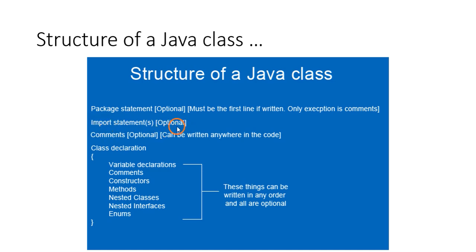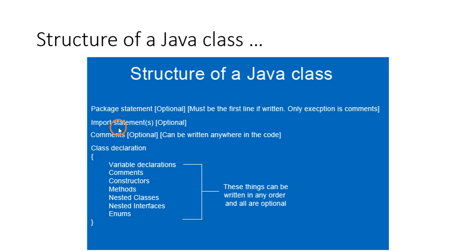Otherwise, the next thing will be one or more import statements, and these are also optional. People coming from a C or C++ background know that they use hash include — like hash include stdio.h or hash include stdlib.h. In Java, we use import statements just like we have used hash includes in C.